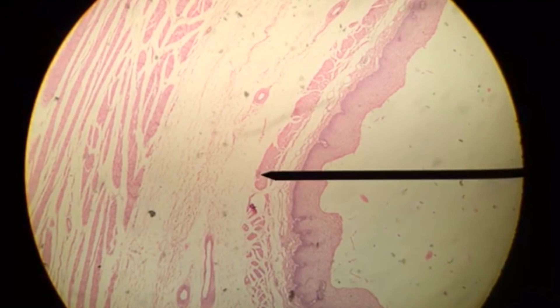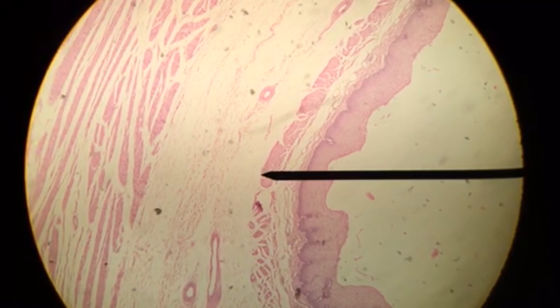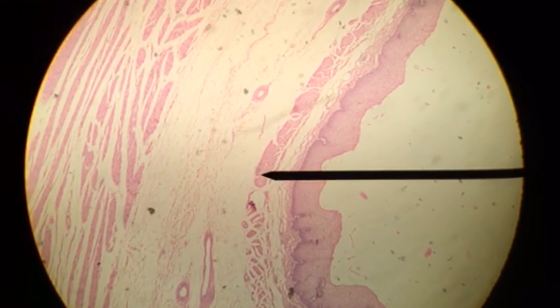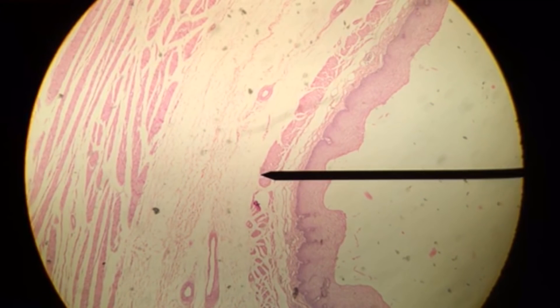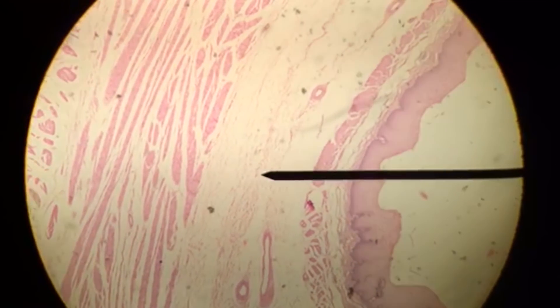The layer that the pointer is on now is still part of the mucosa. It is the muscularis mucosa. Again, do not confuse this layer with the muscularis. This is still part of the mucosa.